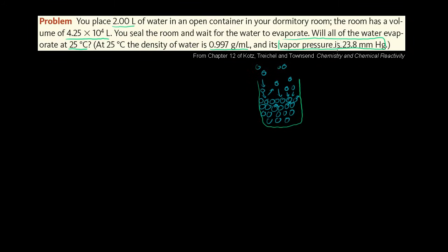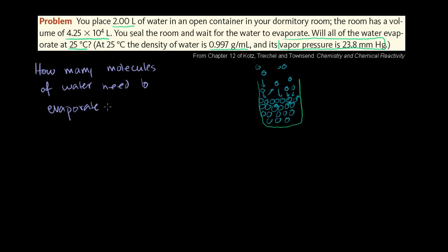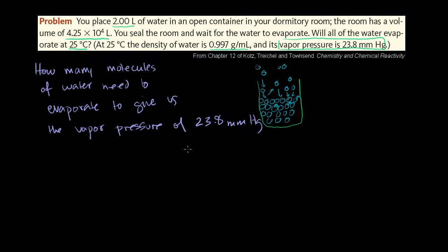What we need to do to figure out this problem is: if we can figure out how many molecules of water need to evaporate to give us this vapor pressure, we can then use the density of water to figure out how many liters that is. So how many molecules of water need to evaporate to give us the vapor pressure of 23.8 millimeters of mercury? What formula or law deals with pressure? It's probably one of the top most useful formulas in chemistry, or really all of science.